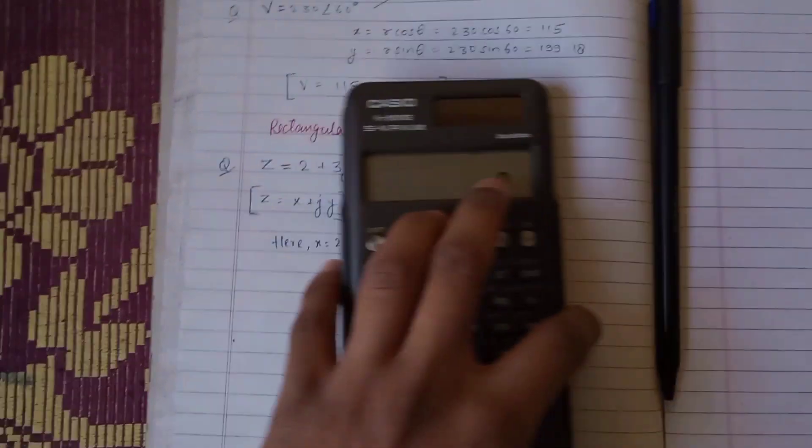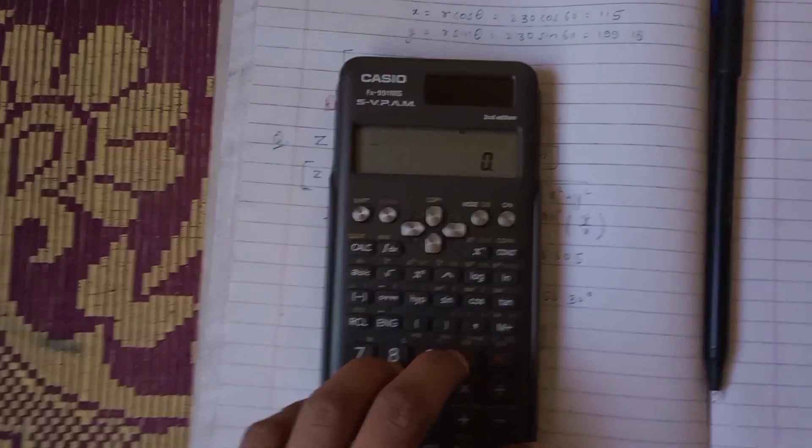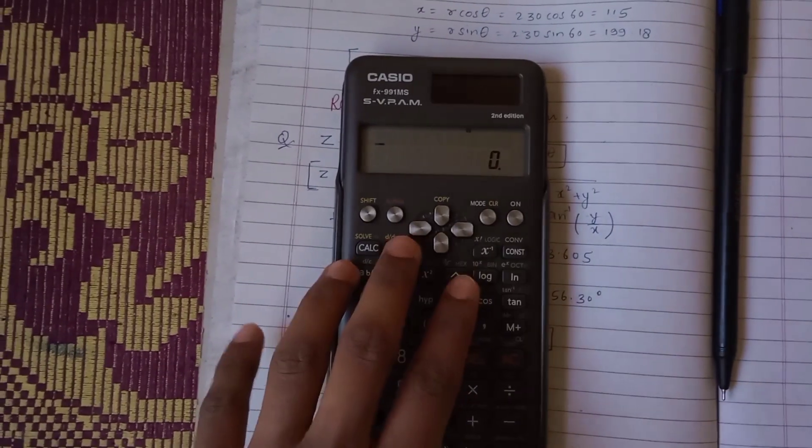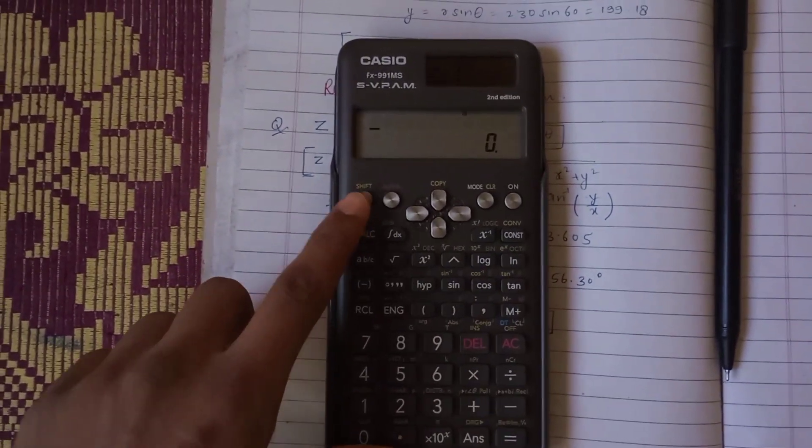We are going to use the fx991ms calculator, as this is the fx991ms playlist. First, turn on the calculator and press shift.